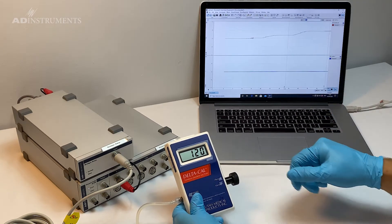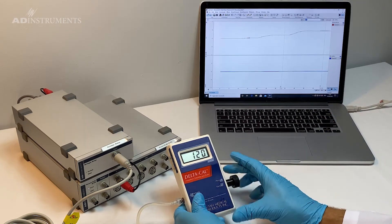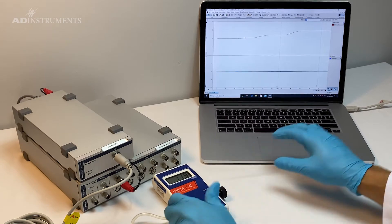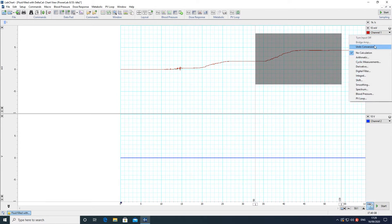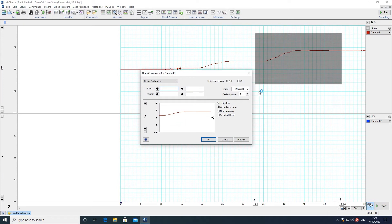Now I can stop the recording and to calibrate I just need to make a selection between those two comments. I can go to units conversion and make a selection in the beginning of that recording.